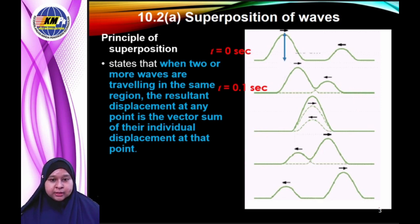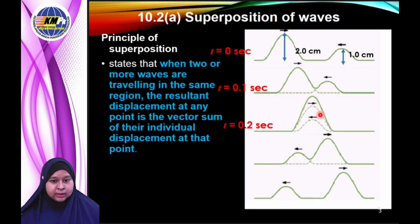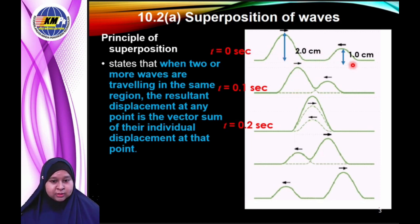The amplitude of the second wave is 1 cm. At 0.2 seconds the waves meet and superposition occurs. According to the principle of superposition, the amplitude of the resultant wave equals the sum of the two waves. The first amplitude is 2 cm and the second amplitude is 1 cm, so the vector sum becomes 3 cm — adding to give a larger amplitude.